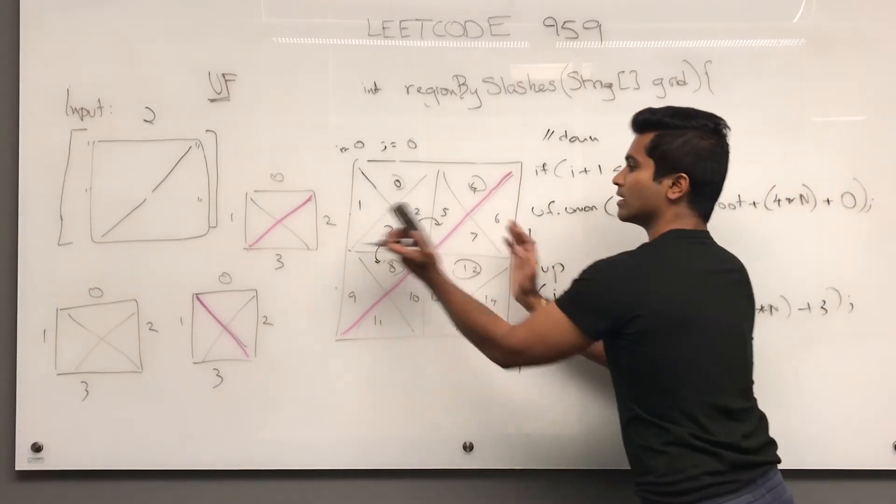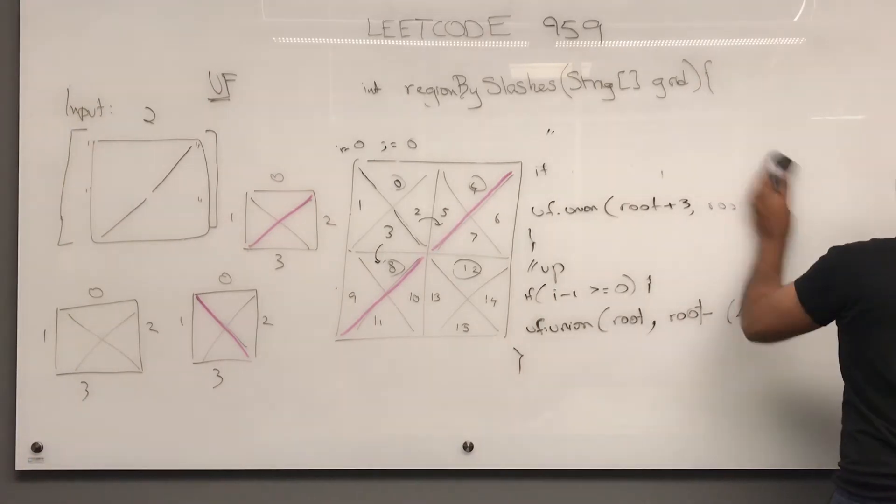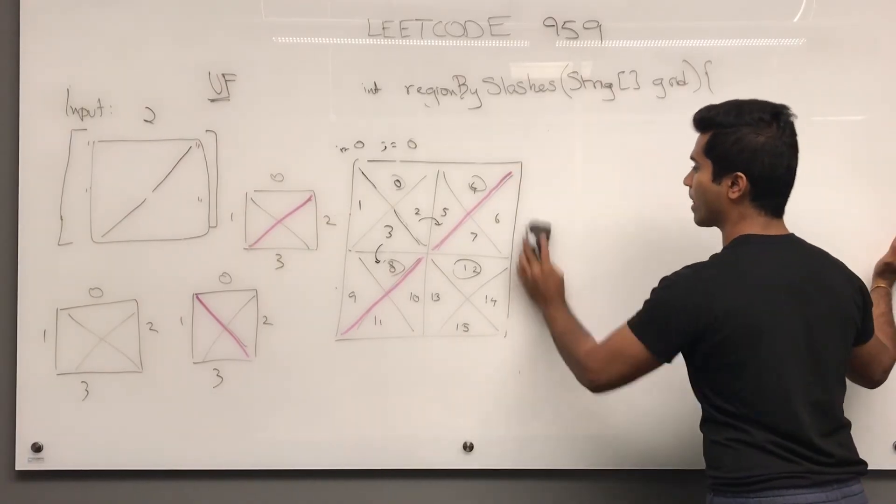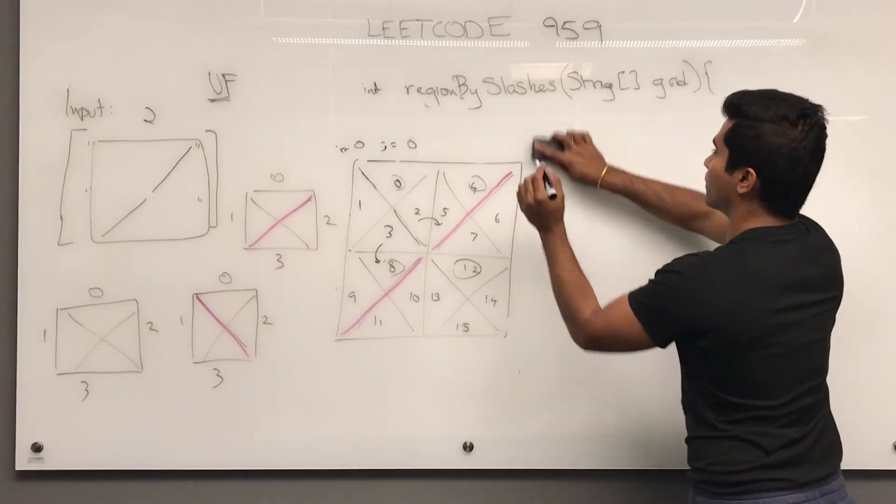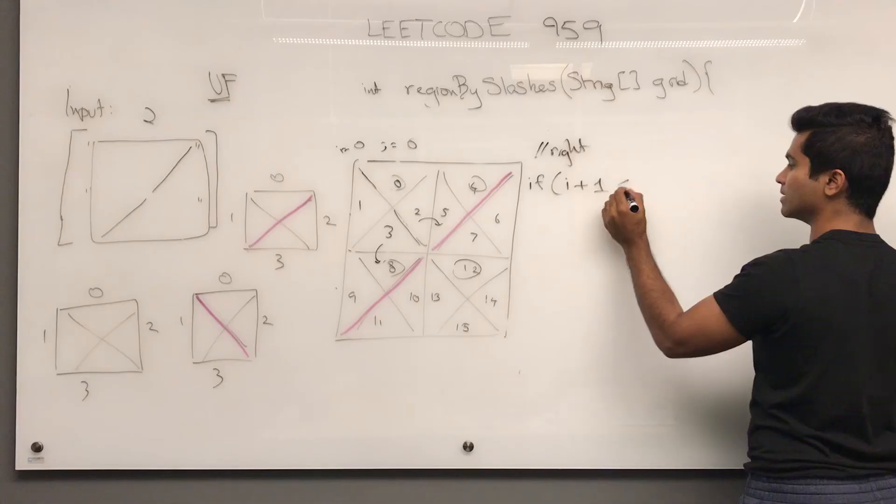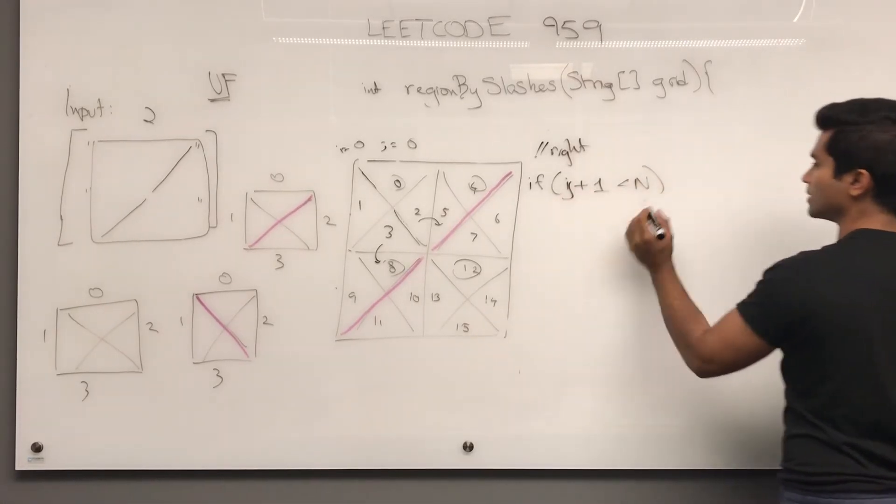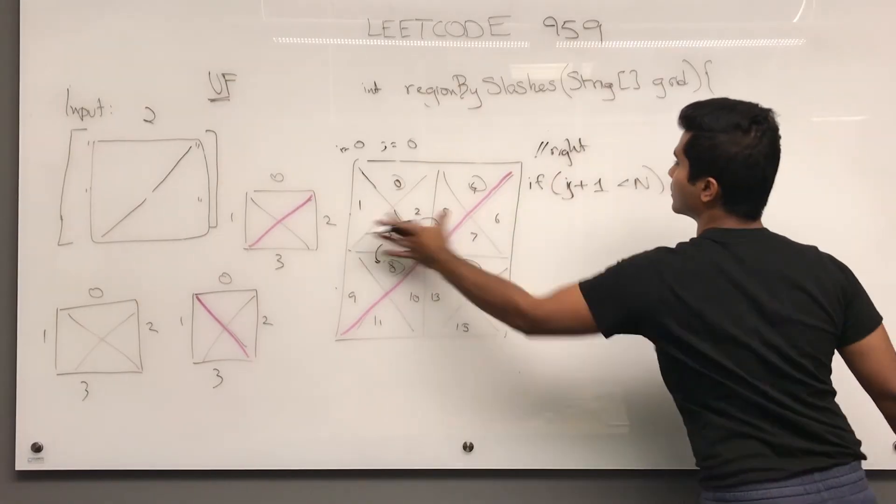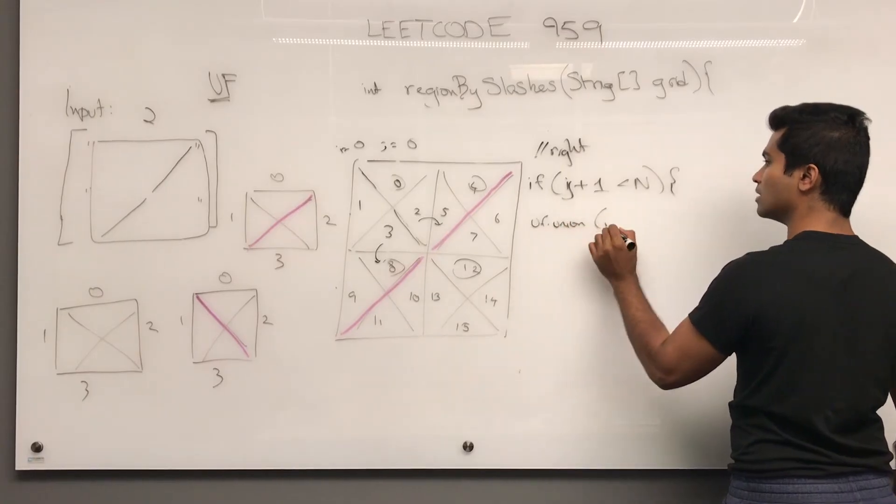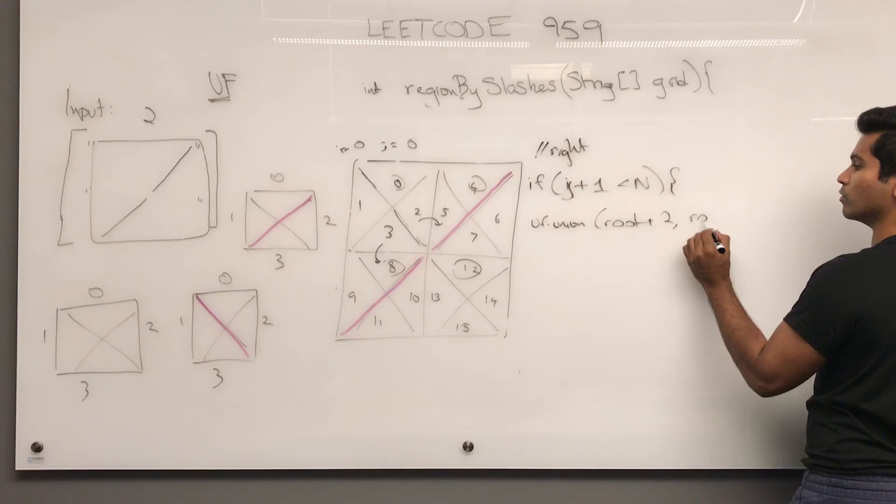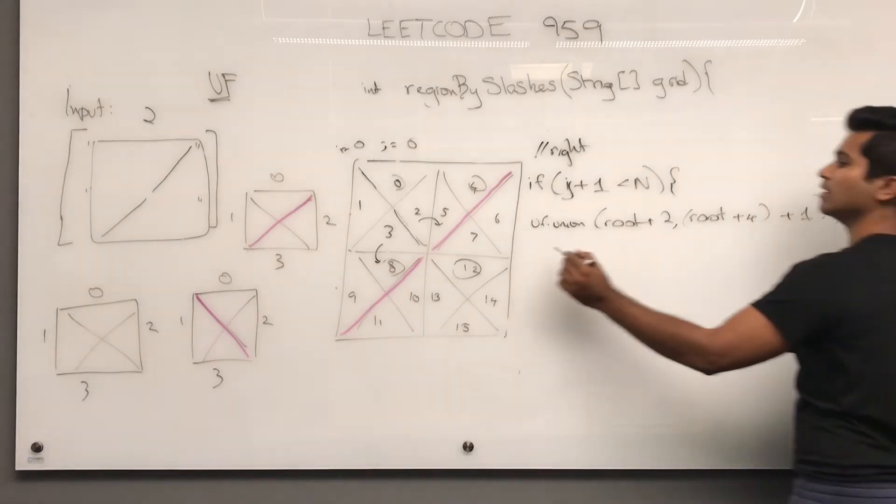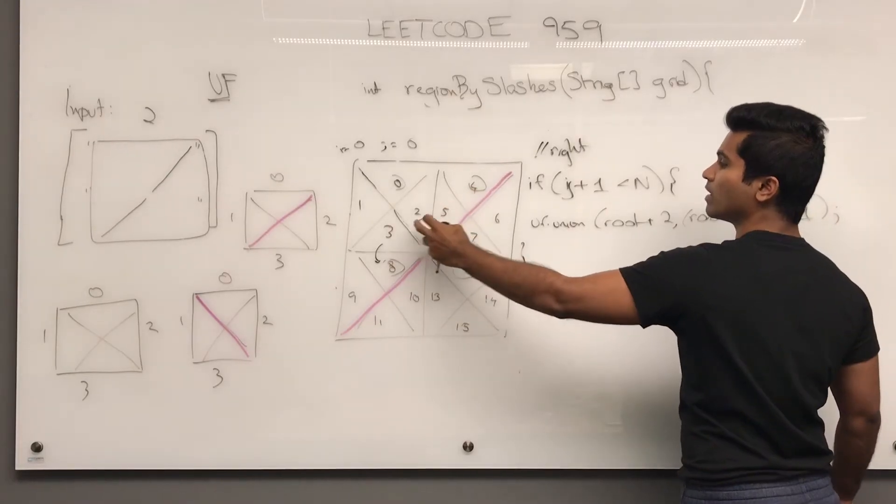Now for left and right. So we have to check this side and that side potentially. For right, if i plus 1 is less than n. Oh no, if j plus 1 is less than n. Then we have to combine this guy and this guy. So uf dot union, root plus 2, and then root plus 4, plus 1. So from 0 we go to 4, and then 4 plus 1 is 5, and then we combine these two.